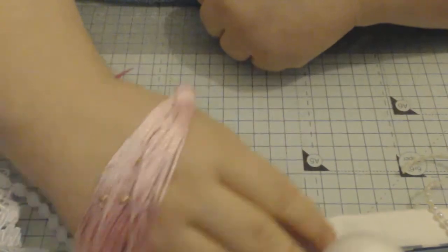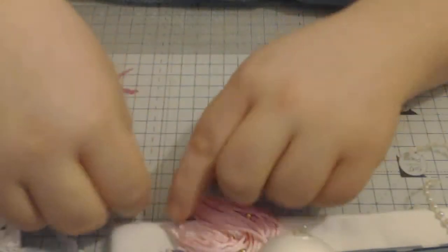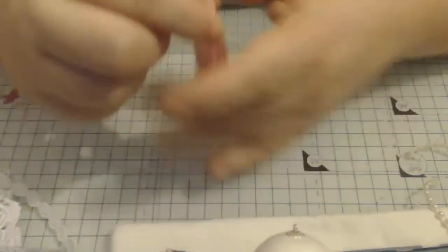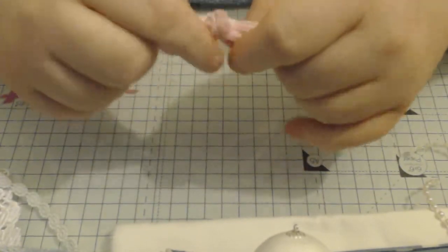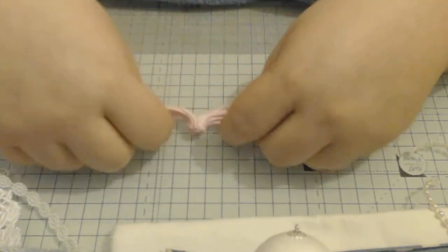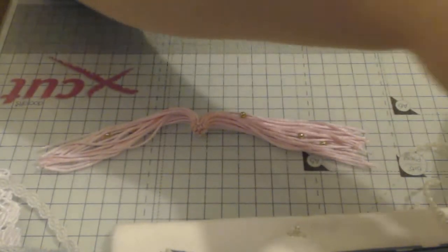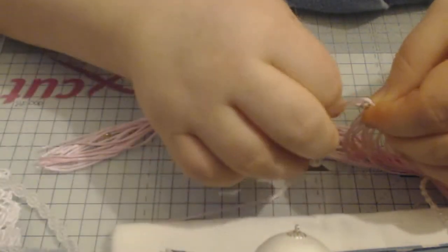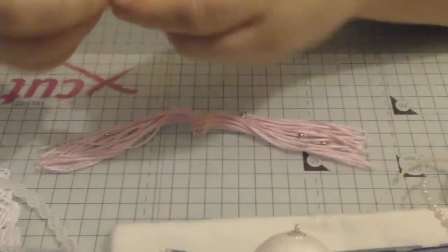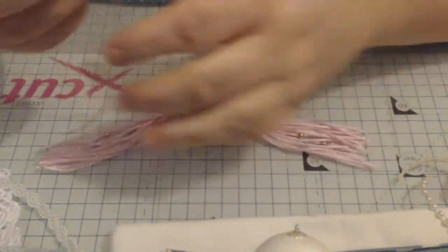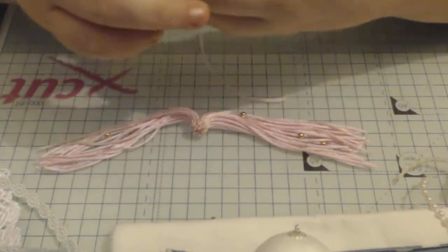And then you end up with a tassel. Now you can easily thread this together, so I'm just going to show you what I do to thread it on. I pull out one of the trims. I'll do it that way. Now this is just for speed I'm doing it this way.